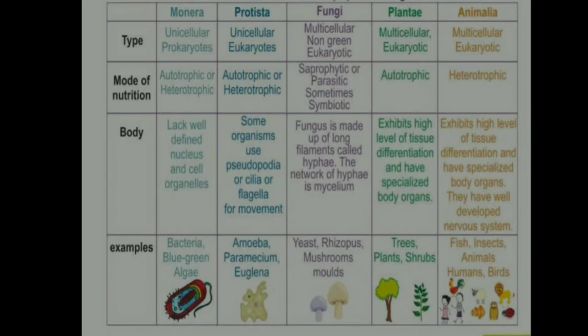In the Five Kingdom classification: Monera consists of unicellular prokaryotes. Mode of nutrition is heterotrophic or autotrophic. They lack a well-defined nucleus and cell organelles. Examples include bacteria and blue-green algae.